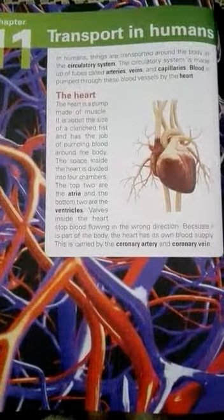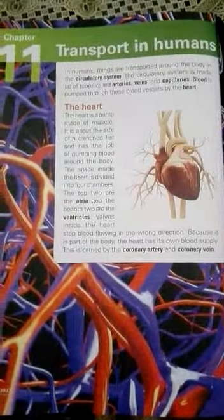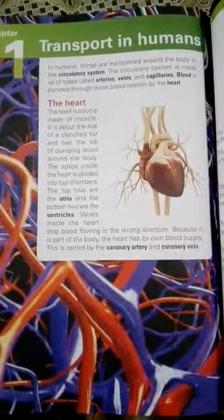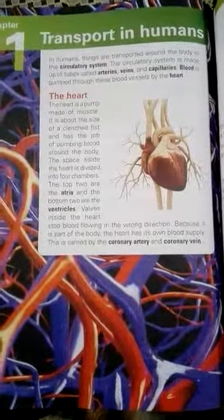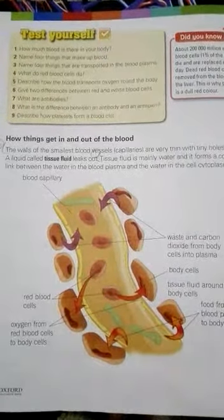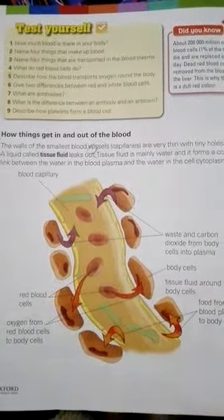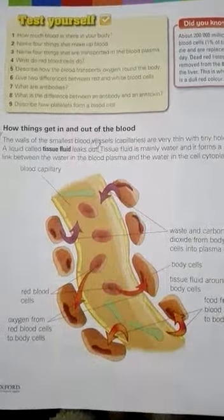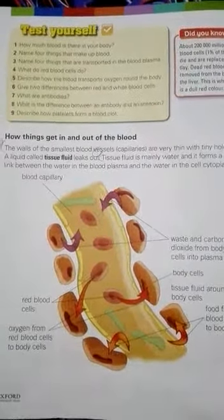Assalamu alaikum students, welcome to the class. This is the book of Science for Class 7. Open your books at page number 136. This is Chapter 11, 'Transport in Humans,' about how blood is transported in humans. This chapter was in continuity in class, so we will start from the topic where we left off last lecture. The topic we will study today is how things get in and out of the blood.